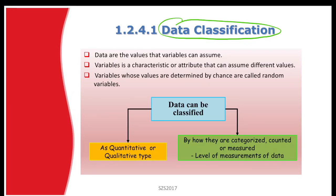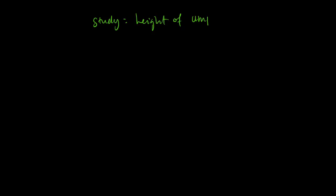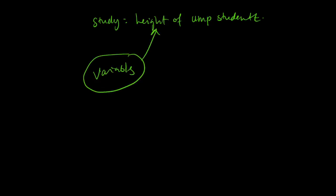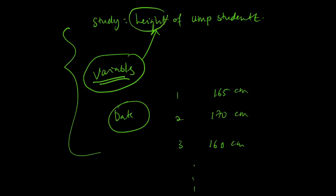Before that — what is data, and what is a variable? Data is the values that variables can assume. A variable is the characteristic of the data that you want to collect. For example, if I want to study the height of UMP students, the variable is the height of UMP students. The data would be: student 1 — 165 cm, student 2 — 170 cm, student 3 — 160 cm, and so on.